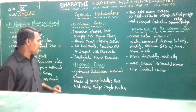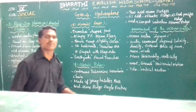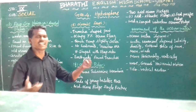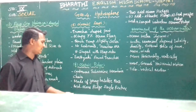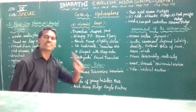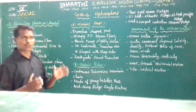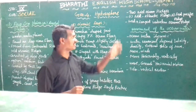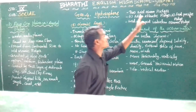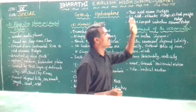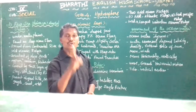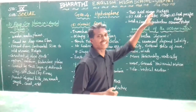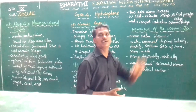There are two types of mid-oceanic ridges. One is the mid-Atlantic ridge and the second one is the East Pacific ridge. The mid-Atlantic ridge is the largest unbroken oceanic ridge.